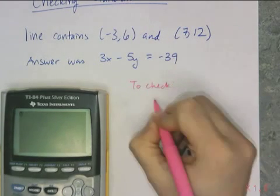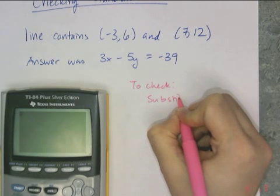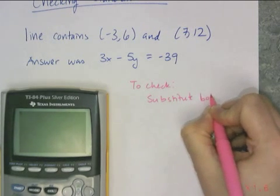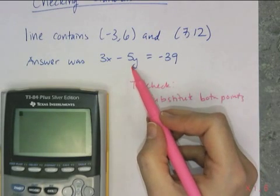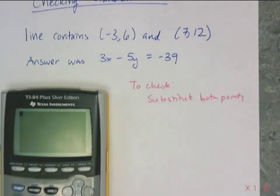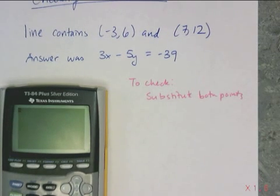what you're going to do is you're going to substitute in both points and make sure that when you multiply the x value times 3 and you subtract off 5 times the y value, you get the negative 39 for both points. So I do 3 times negative 3 minus 5 times 6 and I better get negative 39.